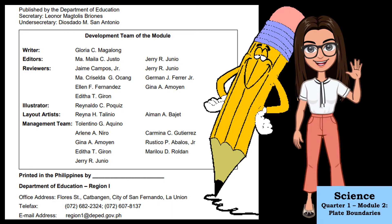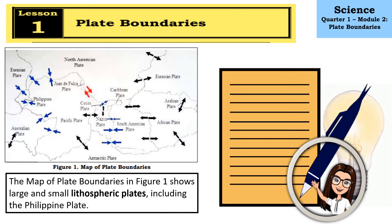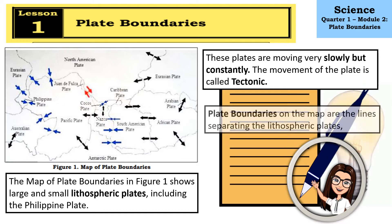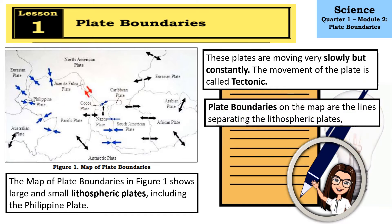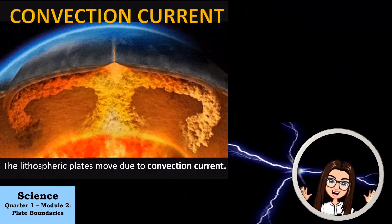Our lesson is about plate boundaries. The map of plate boundaries in Figure 1 shows large and small lithospheric plates, including the Philippine plate. These plates are moving very slowly but constantly. The movement of the plates is called tectonic plate movement. The boundaries on the map are the lines separating the lithospheric plates.